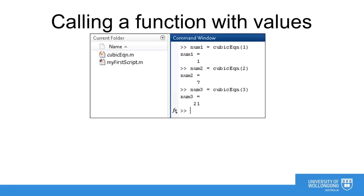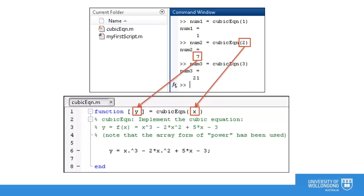Back in the command window, we can call the function we have written with various inputs and store the answer in output variables. Notice that we do not have to use the variable names that were used inside the function. The x and y variables in the function file are called dummy variables and only exist within the function as a way of describing that function's behavior.